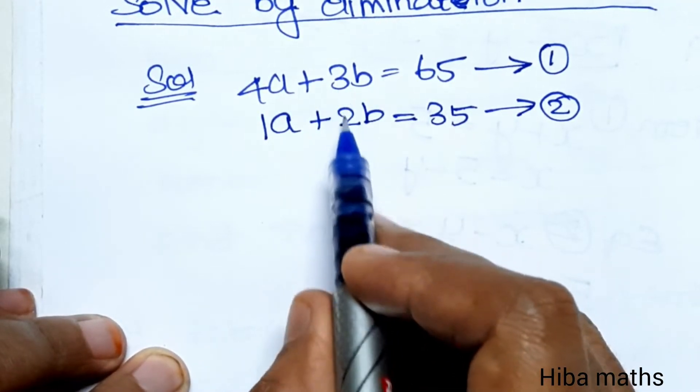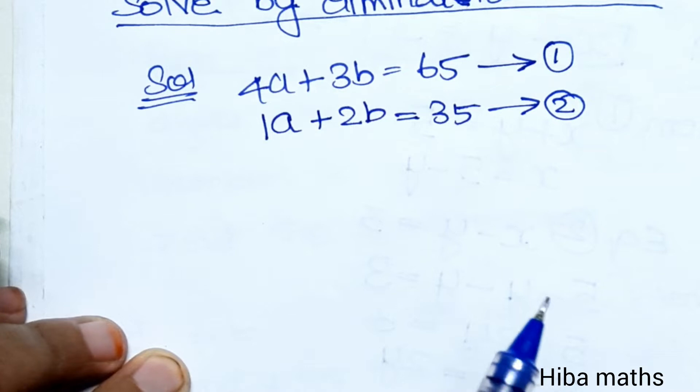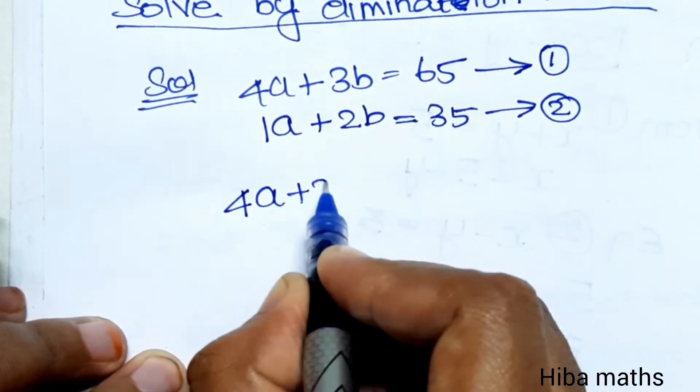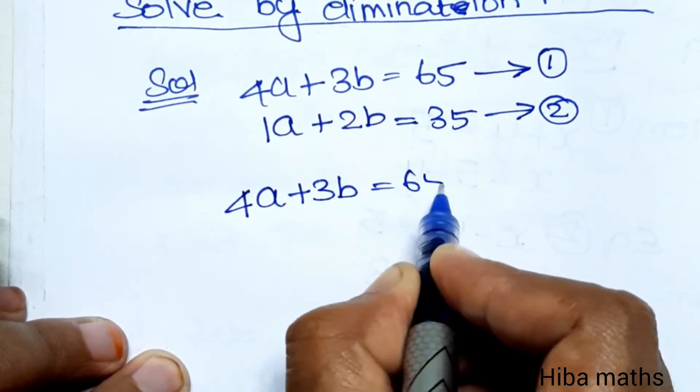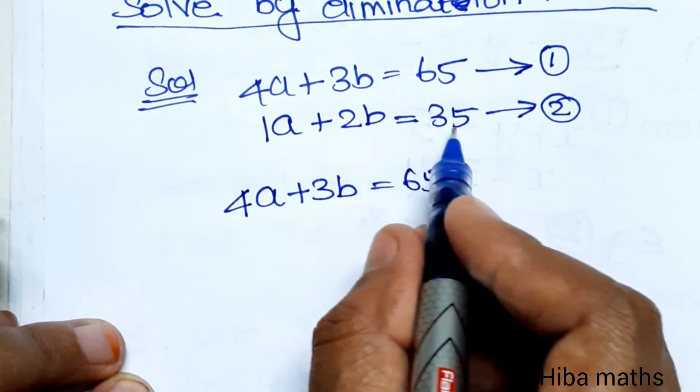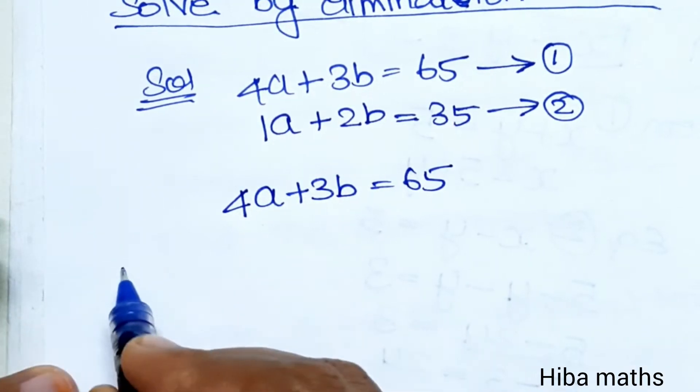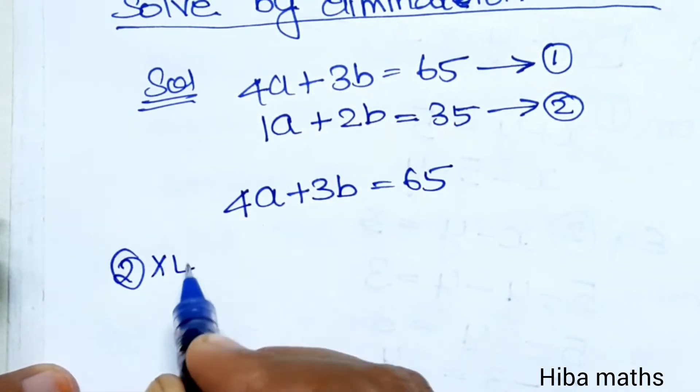We will make the a coefficients equal. First equation: 4a plus 3b equals 65. Second equation: we multiply by 4 to get 4a plus 8b.